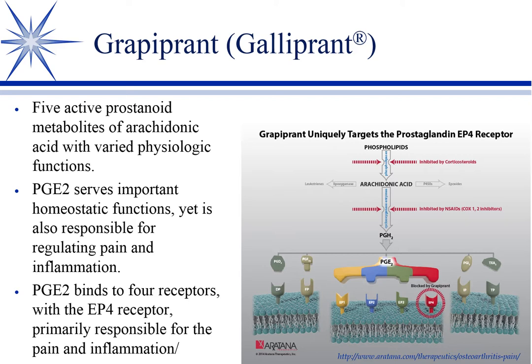Remember, NSAIDs inhibit cyclooxygenase, which inhibits the production of prostaglandins. There are five active prostaglandin metabolites of arachidonic acid. Prostaglandin E2 is one of them — it serves some homeostatic roles, including normal mucus production in the stomach that's cytoprotective, and it's involved in maintaining renal blood flow when GFR drops.